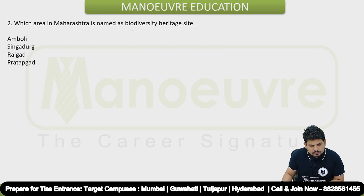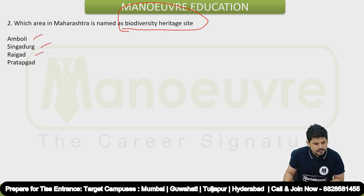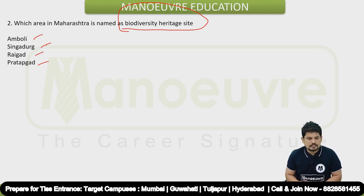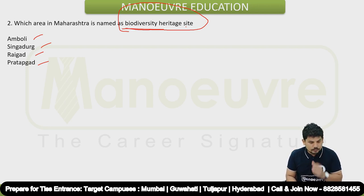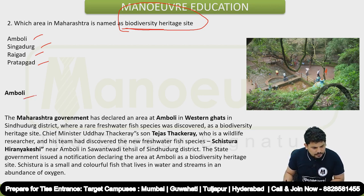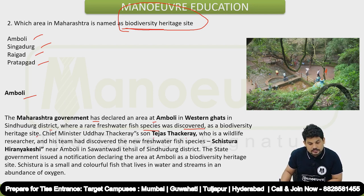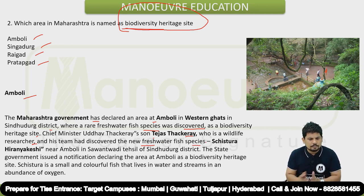Second question: which area in Maharashtra is named as a biodiversity heritage site? The options are Amboli, Sindhu, Raigad, and Pratapgarh. This is related to an important personality, which makes it even more significant. The right answer is Amboli. The Maharashtra government declared an area of Amboli in the Western Ghats in the Sindhu district — where rare freshwater species were discovered — as a biodiversity heritage site. Chief Minister Uddhav Thackeray's son Tejas Thackeray, a wildlife researcher, and his team had discovered the new freshwater species.